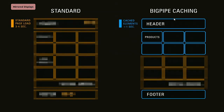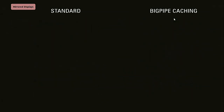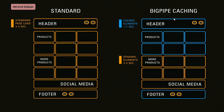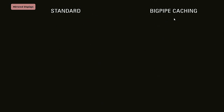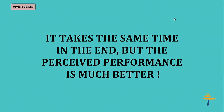Here's a small demonstration between how standard caching works and how BigPipe caching renders the page. In the standard way, it loads all the DOM together, so the user is not able to see any interactive content when they load the site. But with BigPipe, the user sees a header, some products, and a footer first. Then dynamic content — social media and more products — loads in the next phase. It takes the same time in the end, but the perceived performance is better.